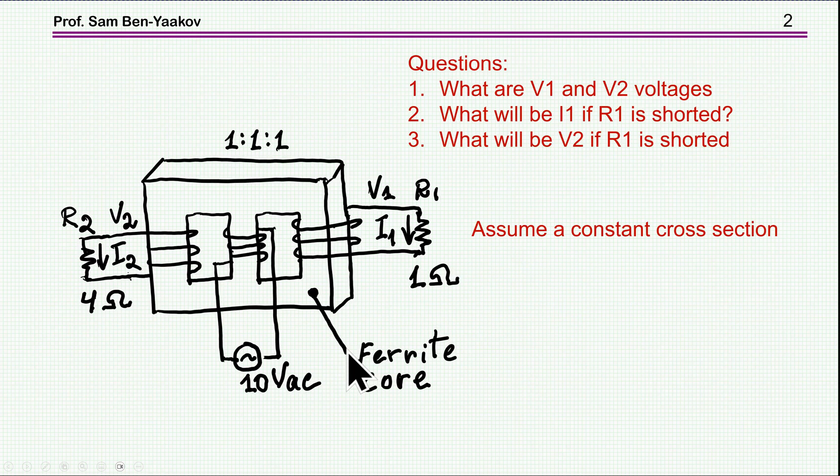So here is the riddle that I've posted earlier. We have here a core, three legs, the ferrite core, no gap. There are three windings on each one of the legs. The middle one has an excitation of 10 volt AC, and then on the side legs we have 4 ohms, 1 ohm. The ratio is 1 to 1, that is the same number of turns on each leg.